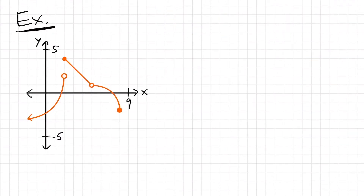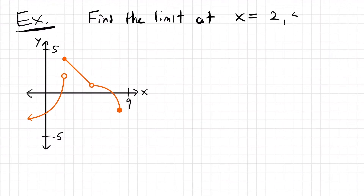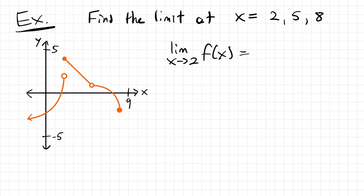Next we're going to be looking at this example, which isn't a particular function, but it will be helpful for looking at some more different graphical limits. We're going to find the limit at x equals 2, 5, and 8. Starting with the limit as x approaches 2, we identify where x equals 2 is on the graph. Starting from the right side and following our function until we get to x equals 2, we find ourselves at y equals 4.